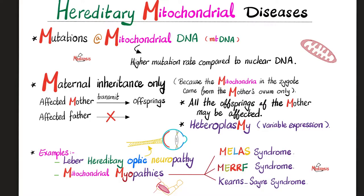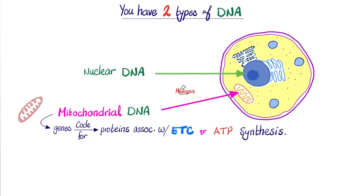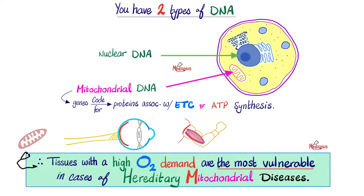Today we are focused on Kearns-Sayre syndrome. Normally, mitochondrial DNA contains genes that code for proteins associated with the electron transport chain and ATP production. That's why in patients with hereditary mitochondrial diseases, the organs that suffer the most are those that are the most active and in the greatest need of ATP — the optic nerve, the eyes, the muscles, the heart, the brain, etc.